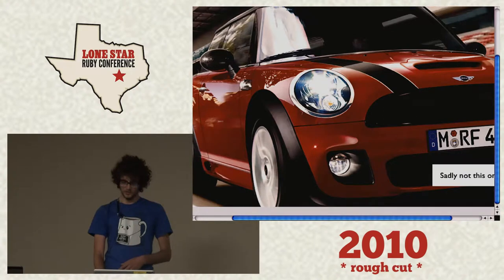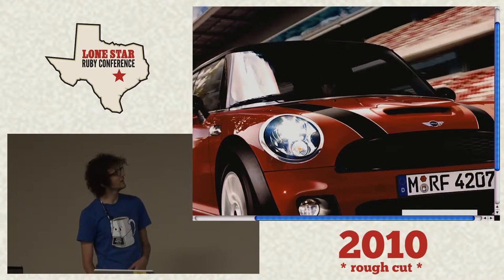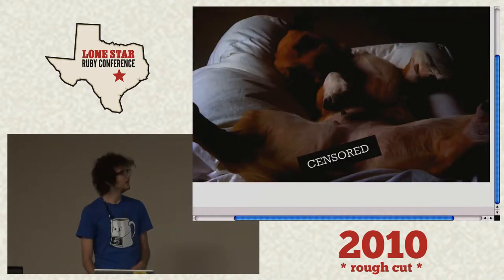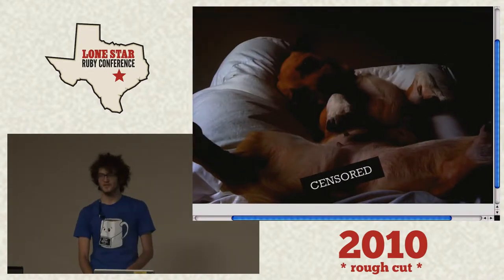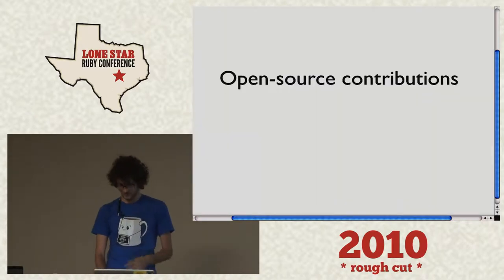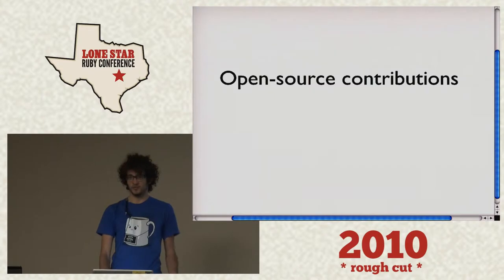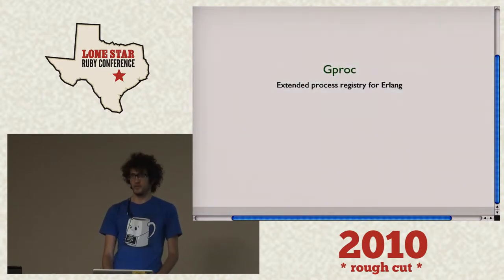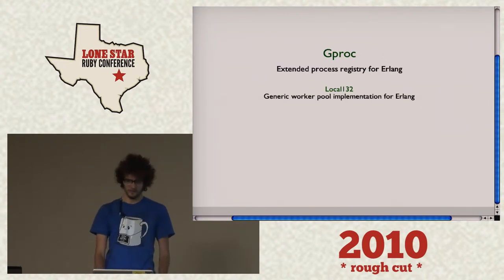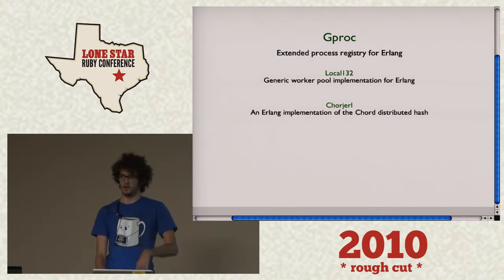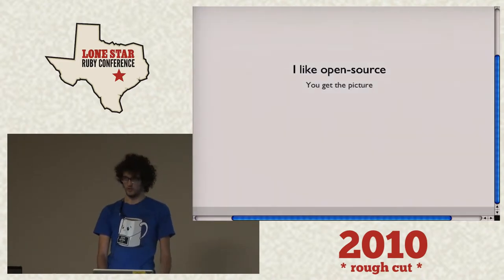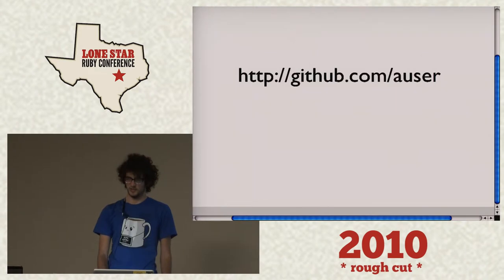I have a totally rad Mini Cooper — sadly, it's not this one, because that's a really rad Mini Cooper — and I also have a totally rad dog. I do a lot of open source; I primarily only work in open source. You can see all my open source stuff at GitHub slash auser. Auser is my name everywhere except here — here I'm ralearner. These are just some examples of some of my open source work.